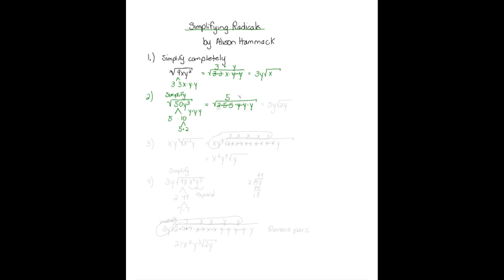The y's are a pair — one comes out. So on the outside we're left with five times y times the square root of two and y. And this problem is done.